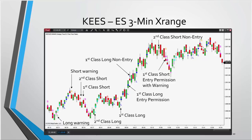Just because we have an L or S on the chart doesn't always mean we have to take that trade at that point. One of the things we're looking for is big dots versus small dots — the big dots are permissioned for entry signals, the small dots show us trend direction and strength but are not necessarily permission for an entry.